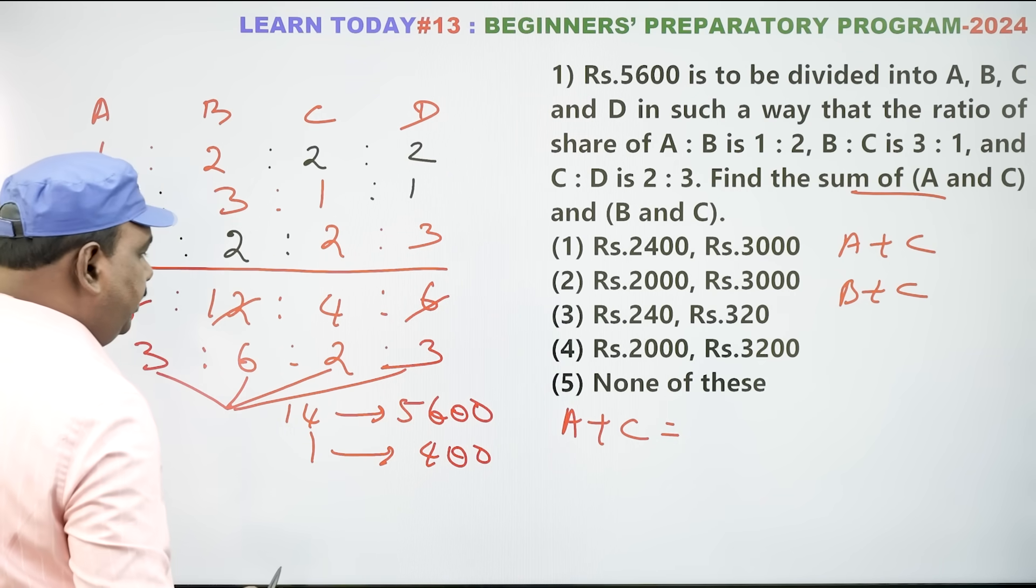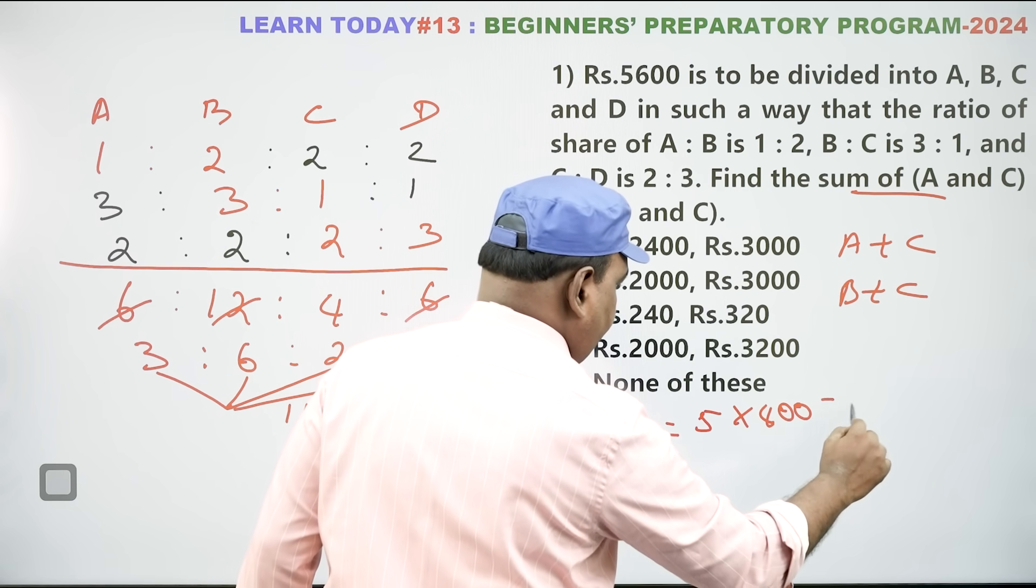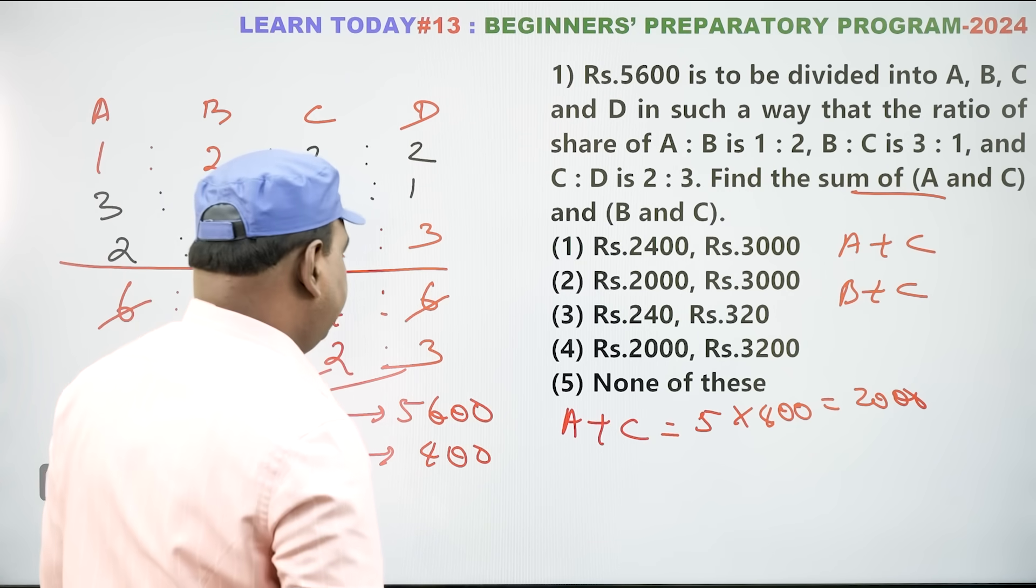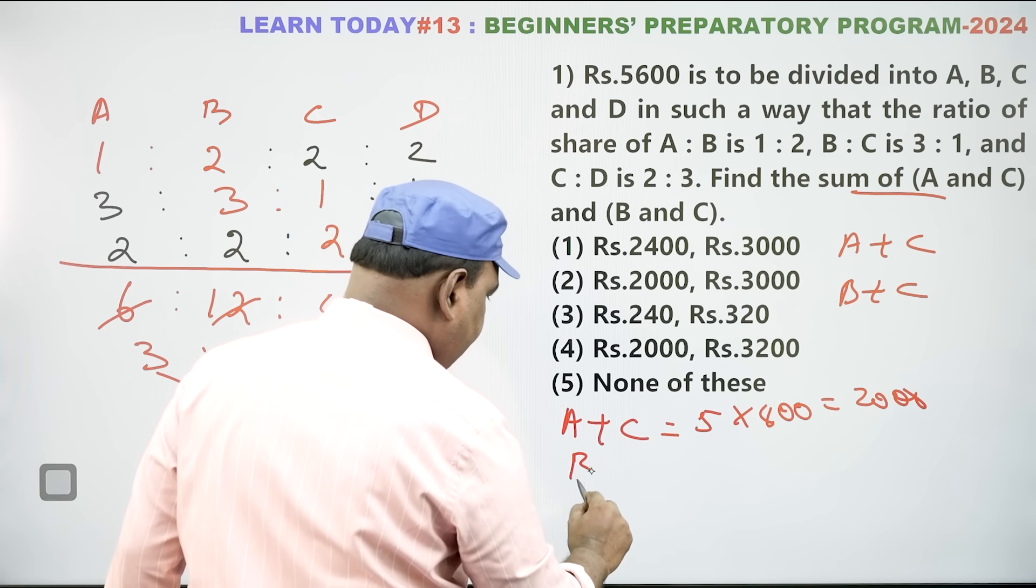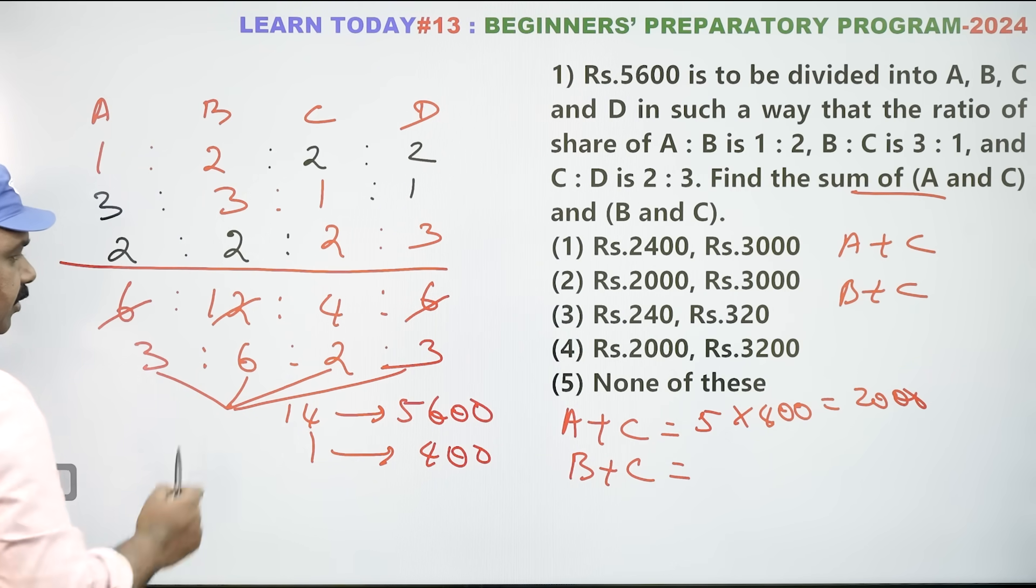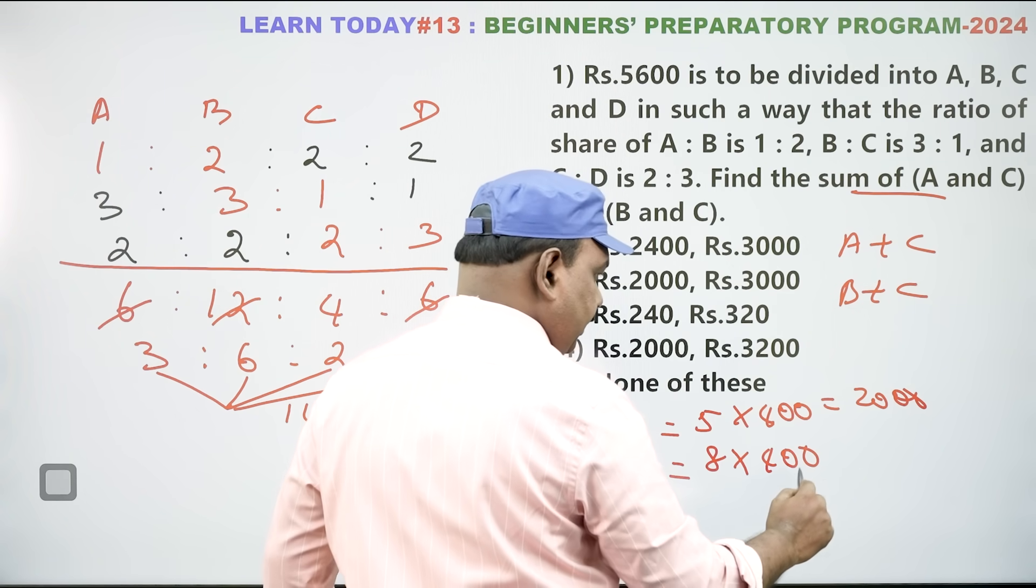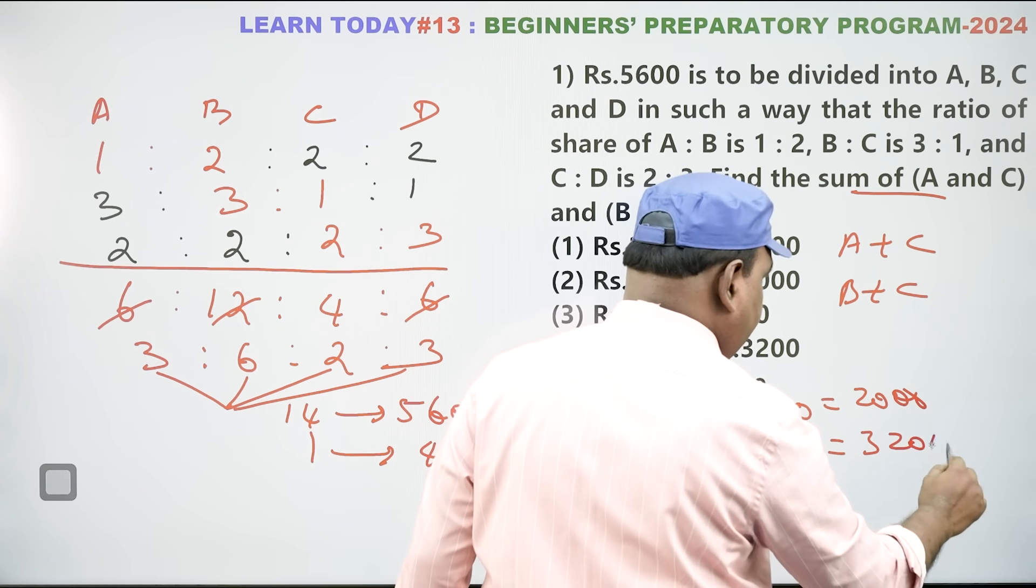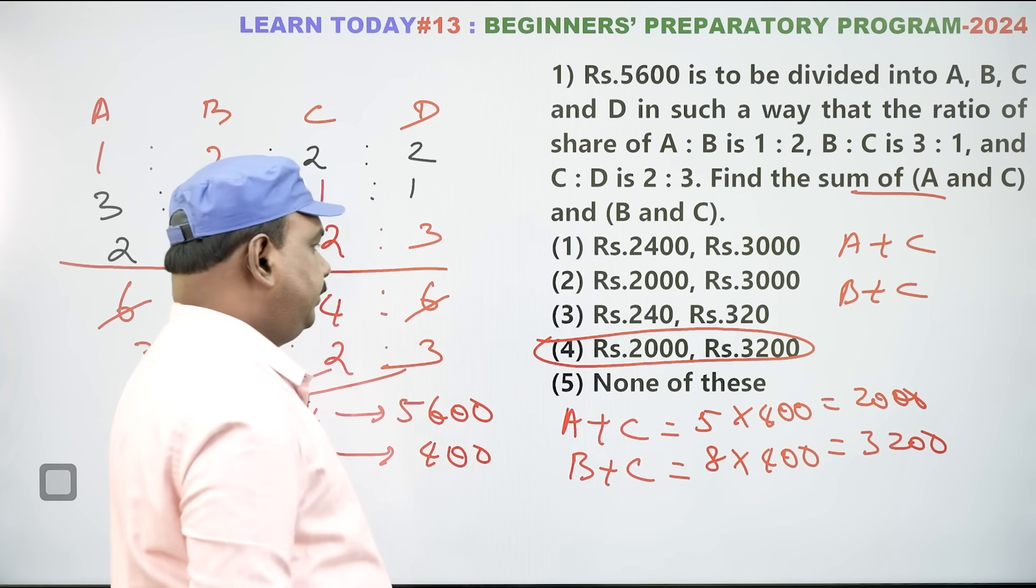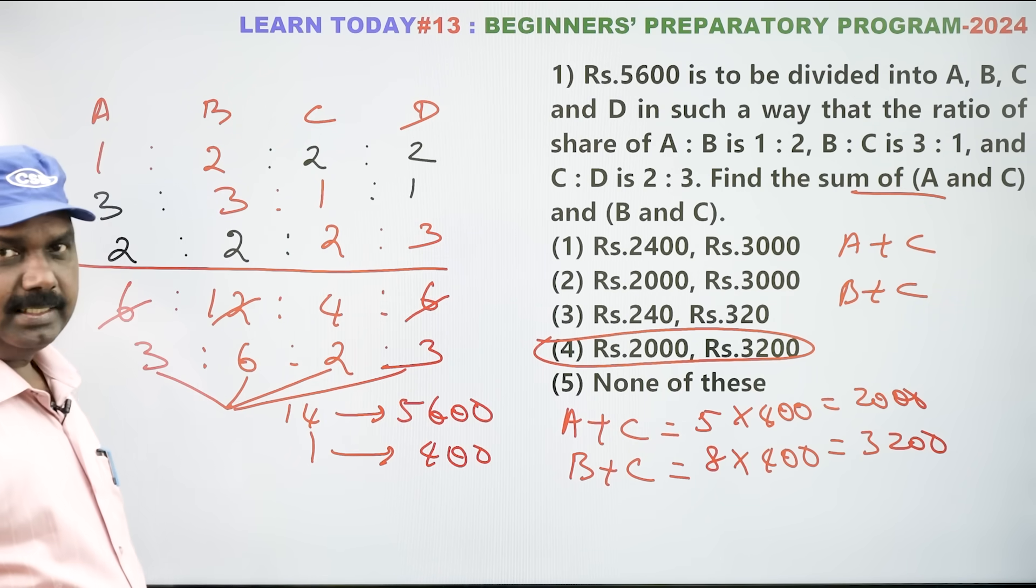So, now A and C. A plus C ratio is how much? Next, B and C. B and C, how much? B 6 parts, C 12 parts. Total 8 parts earlier. 8 into 400. 8 times 4 is how much? 32. So, 3,200. That is the answer. So, 2,000 and 3,200. This is your answer. Okay, indirect ratio, direct convert method used. Easy.